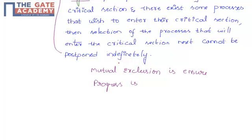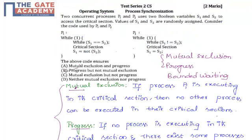Progress is not ensured here because a process outside the critical section can stop another process from entering the critical section. So progress is not ensured, which means the answer is option C.